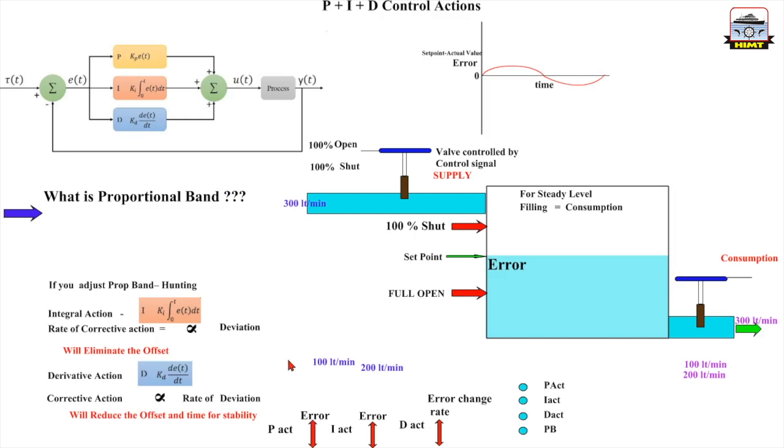Here it means that the valve opening is going to see how fast the deviation is happening. Rate of deviation, that means how fast the deviation is happening. So it is predictive in nature.